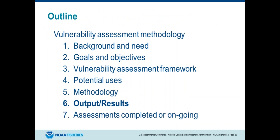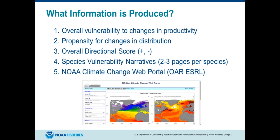So that is the methodology in a nutshell. Just to talk about the output and results. There are five main types of information produced. First, most obviously, the overall vulnerability to changes in productivity. Second, we provide an estimate of the ability of that species to change distribution. And then we added an overall directional score — after experts did all their ranking, we had them go back and say: for this species in the next 10 years in your region, do you expect it overall to do better, to do worse, or be neutral?